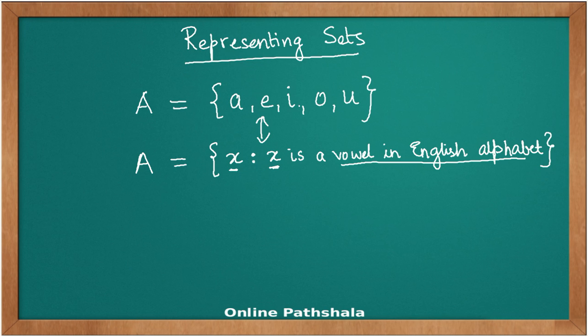You can convert between these two forms. If you are given this, you can come up with this form. Mathematicians call this a roster form of representation, and this form in which we write a general rule is known as a set builder form.